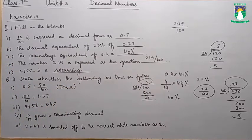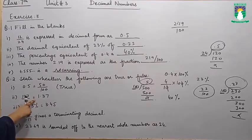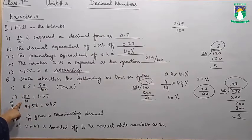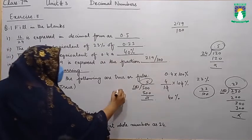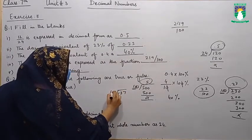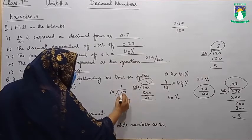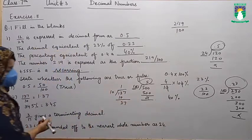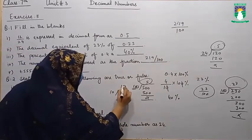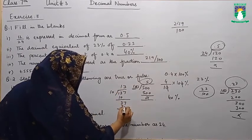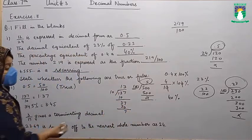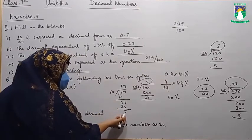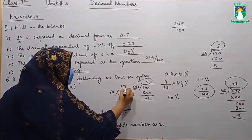Now students, the second statement: 137 divided by 10 is equal to 1.37. If we divide 137 by 10: 10 ones are 10, remainder is 3, and bringing down gives 37. Then 10 threes are 30, remainder 7. Since 10 is greater than 7, we place a decimal point here and put 0.